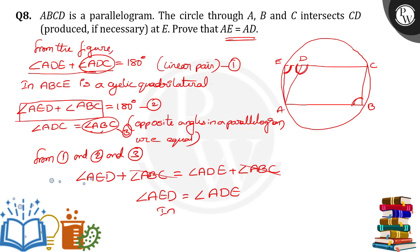In triangle ADE, opposite angles are equal. So AD equals AE. Hence, thank you.